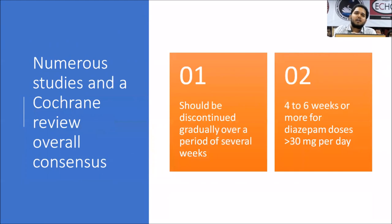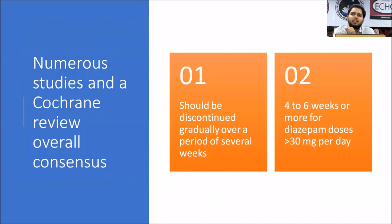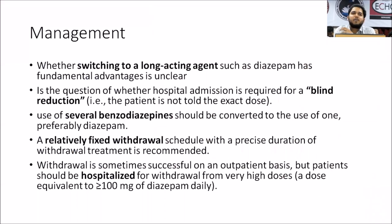Reviewing the overall evidence: all studies clearly indicate that benzodiazepines should be discontinued gradually over several weeks, not days. The dose reduction should extend over more than four to six weeks if the patient requires or is dependent on more than 30 mg diazepam equivalent. This is the conclusion of most Cochrane reviews and consensus guidelines.